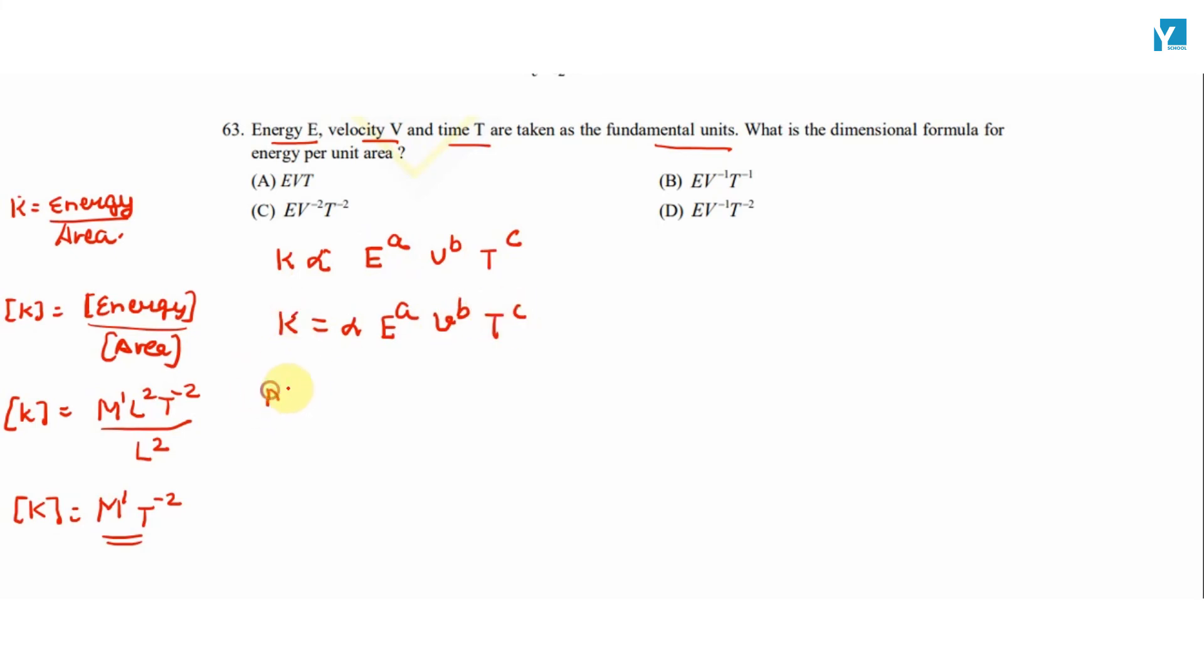K ka dimension in terms of MLT, that is M1 and T-2, is equal to dimension of energy raised to the power a, that is M1 L2 T-3 raised to the power a. Velocity ki dimension is L1 T-1 raised to the power b, and time ki dimension T raised to the power c.